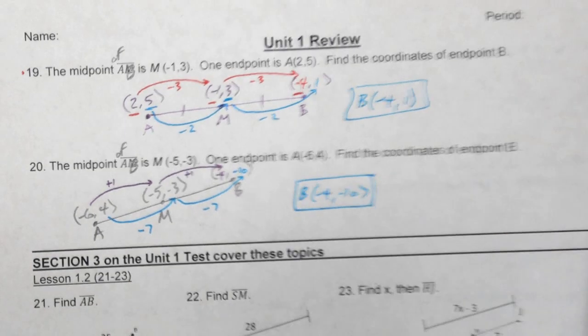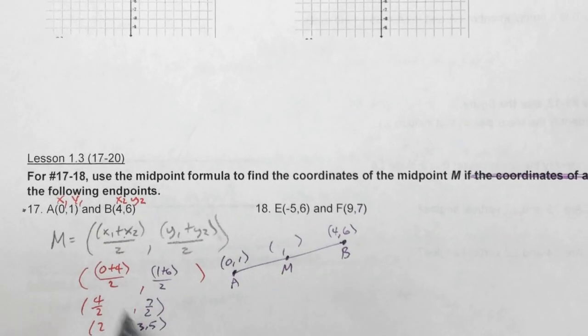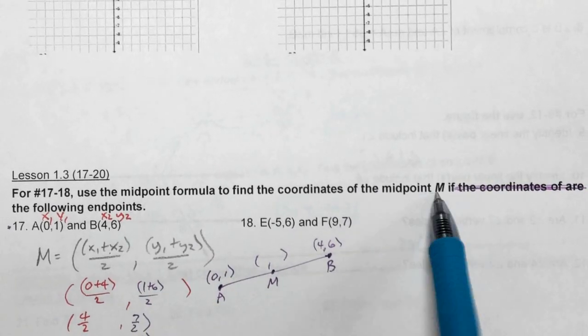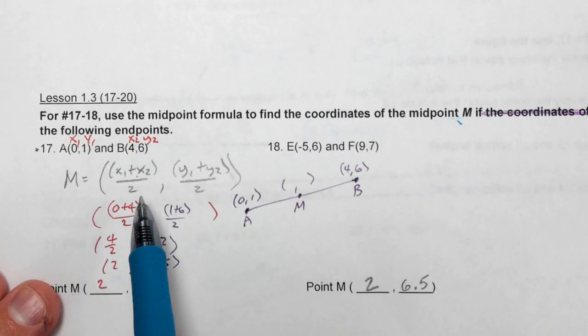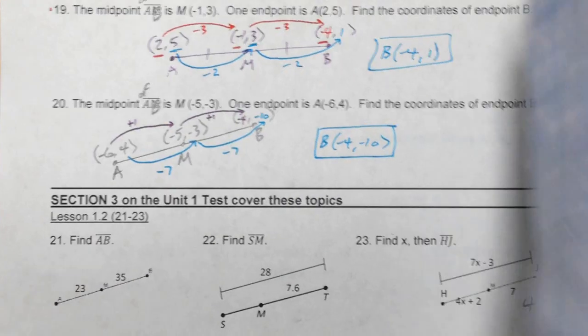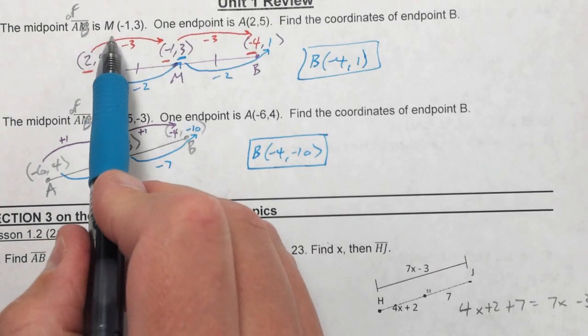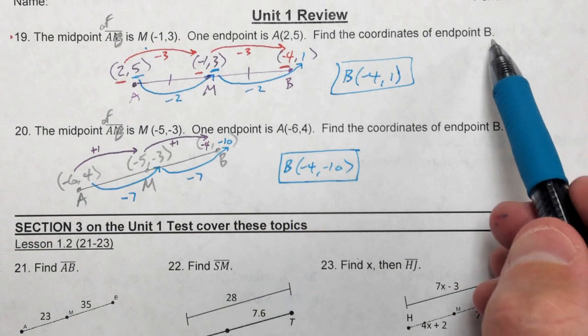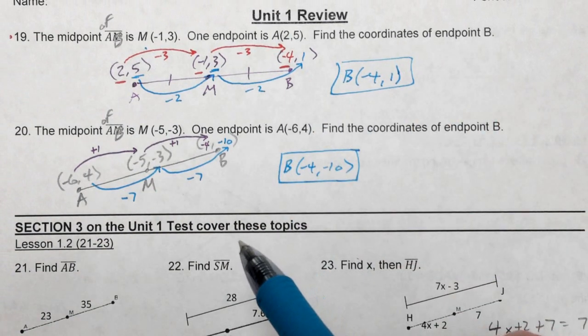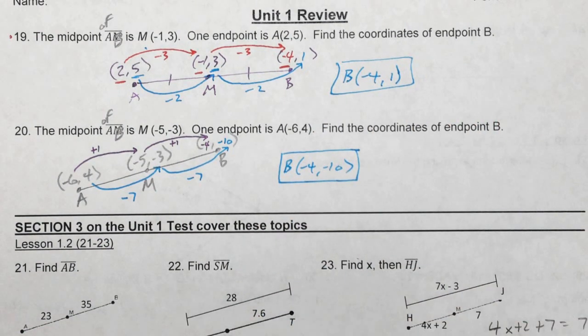Now this one again, 17, we are finding the midpoint. So we're trying to find the midpoint M. So we had to use the midpoint formula. But on 19, we're not trying to find a midpoint. We're given the midpoint. We need to find one of the endpoints. And this is the trick that you need to do to find that.